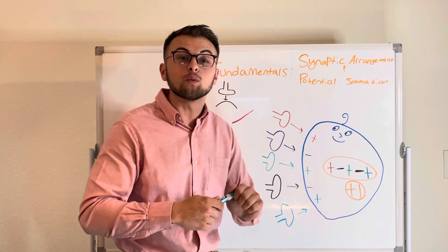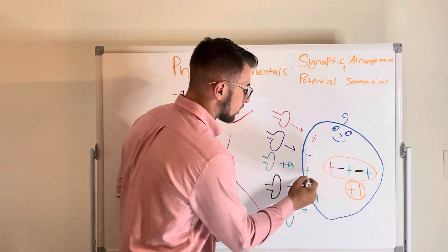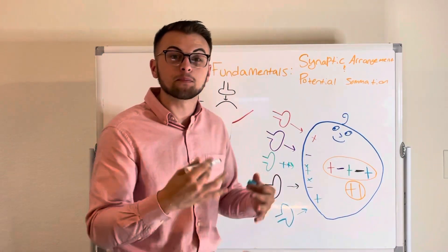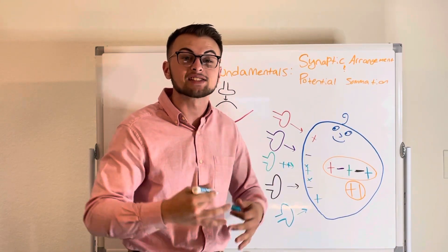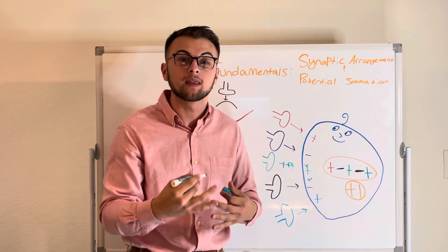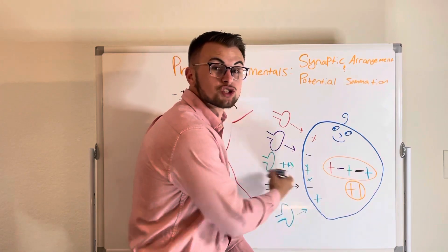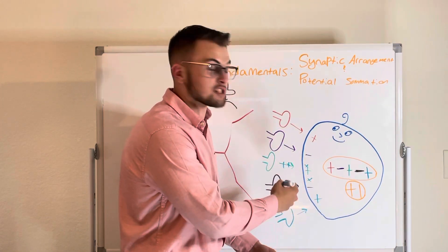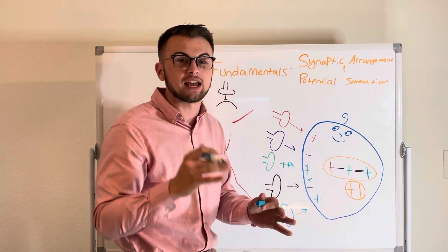Now, when we add up multiple potentials that arrive at the end plate at the same time, we say that the cell has temporal summation. This means that the cell is firing an action potential so fast that it causes some of its potentials to arrive at essentially the same time.